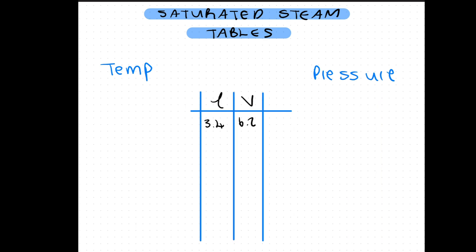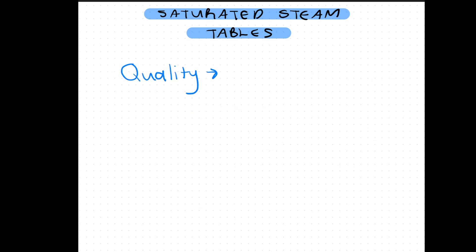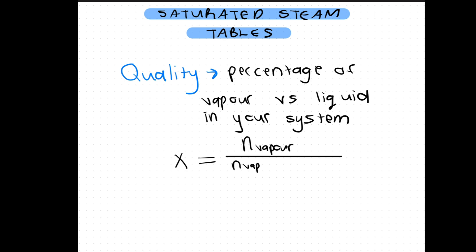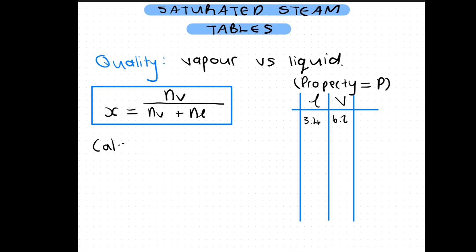The value of your system would be between these two columns. When you want to calculate the property for your system you need a way to account for both the liquid and the vapor. This is called quality. Quality is just the percentage of vapor versus liquid in your system. One way to calculate it is with the moles of liquid and vapor. Once the quality of your system is known you can use it to calculate all the intensive properties of your system with the following formula.